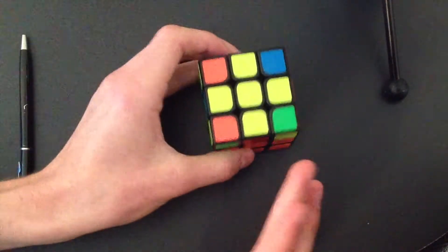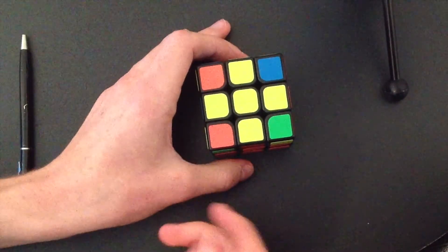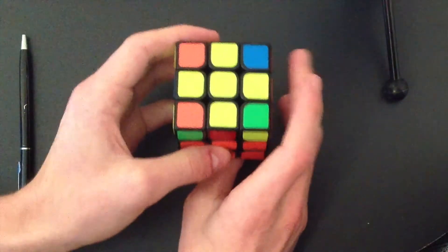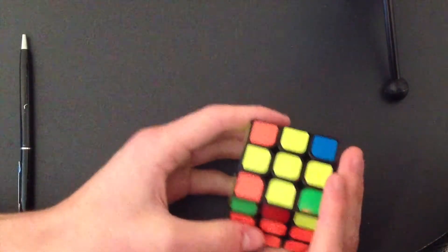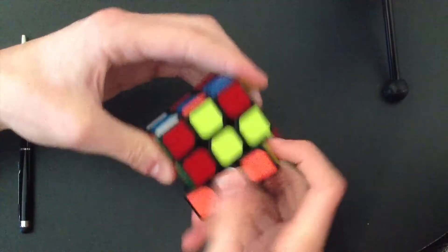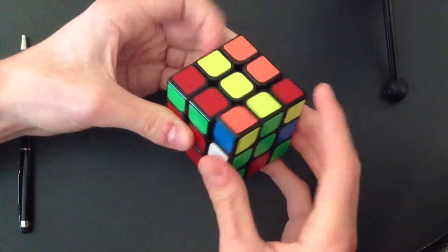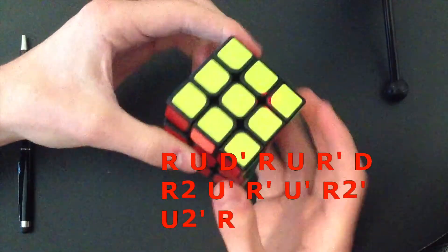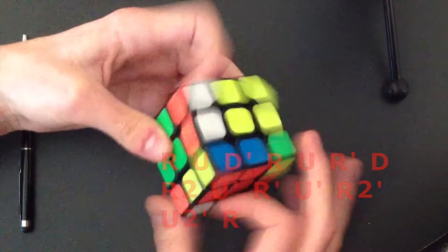And I only learnt this one today myself, so it's going to be quite slow. Although this was about an hour ago. So this algorithm goes like this. There we go. Leaving us with just an easy U-perm.